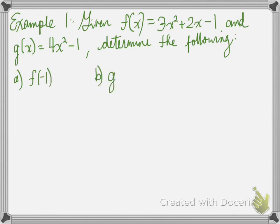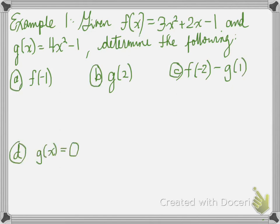So f at negative 1, find g at 2, f at negative 2 minus g at 1, g at x equals 0. So these are the values you're trying to find. Well the first one, think about what this is saying. f at negative 1, we have f at x up here. That's right, x gets replaced with the negative 1.